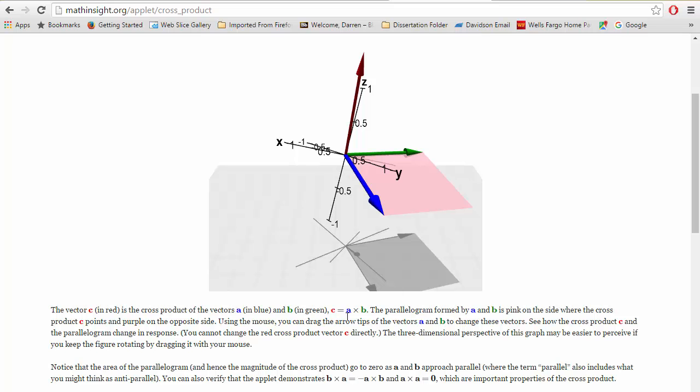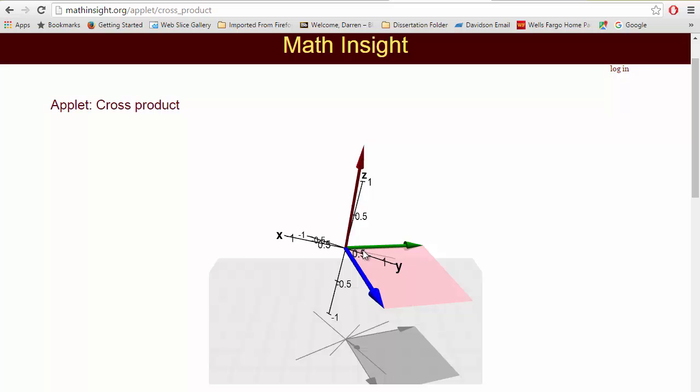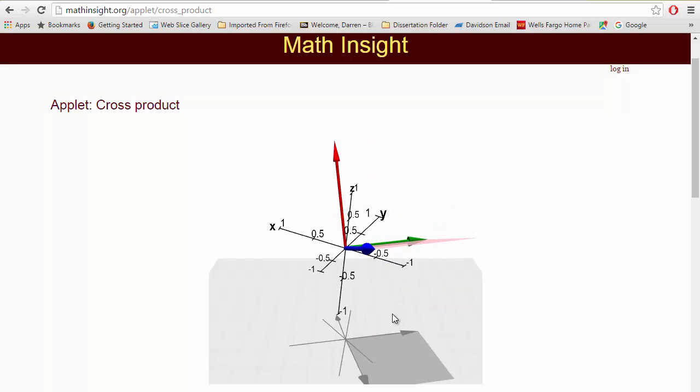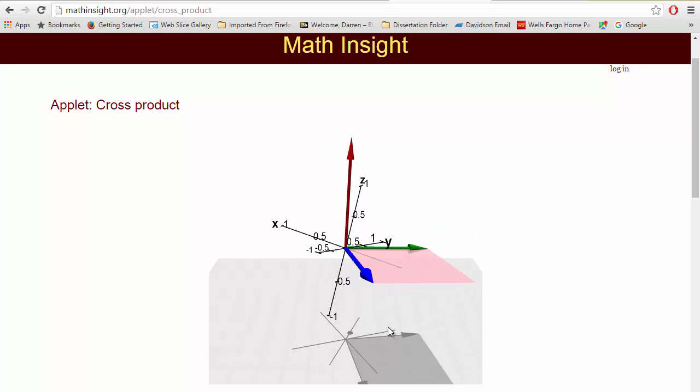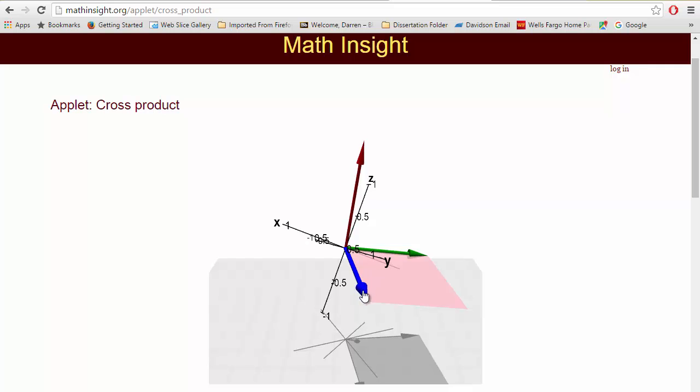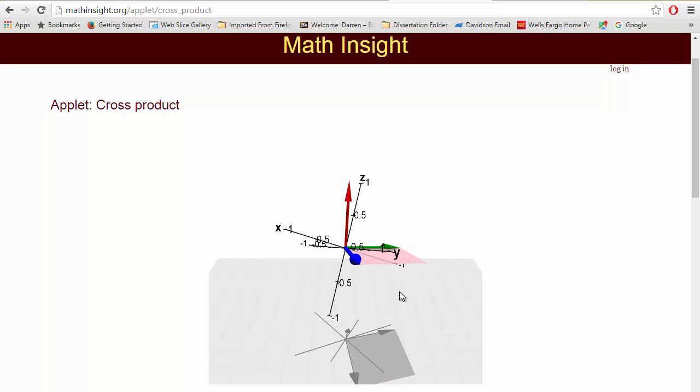You see right down here, it says C equals A cross B. Now watch this, because I just want you to notice a couple of things. If I pull these guys back, predictably, the cross product vector shrinks.